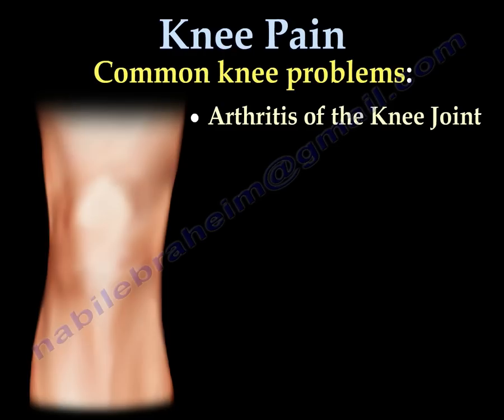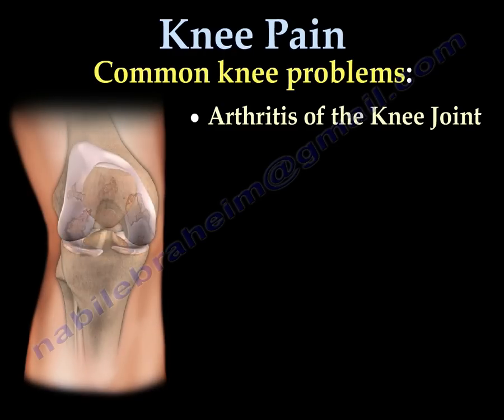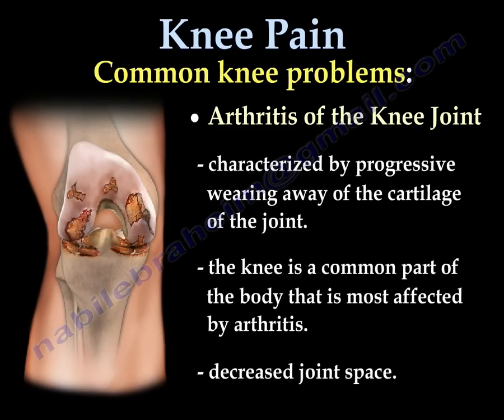Arthritis of the knee is characterized by progressive wearing away of the cartilage of the joint. The knee is the most common part of the body affected by arthritis, and the joint space becomes narrowed.